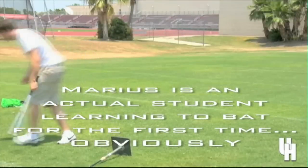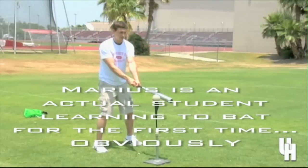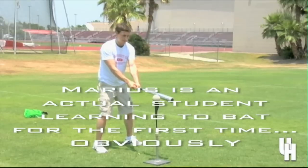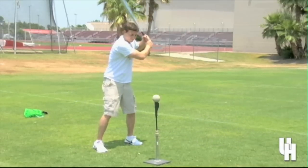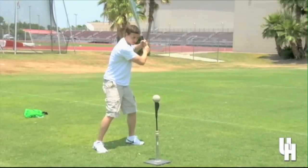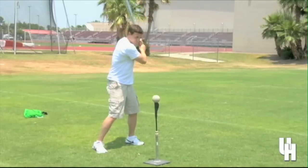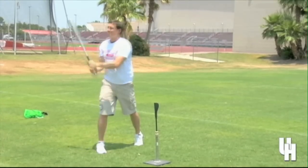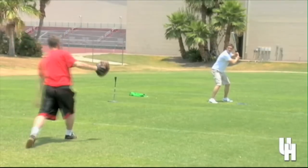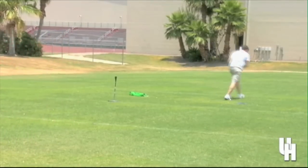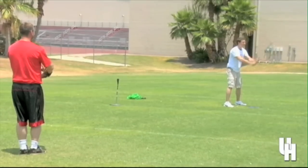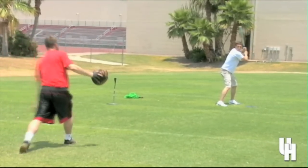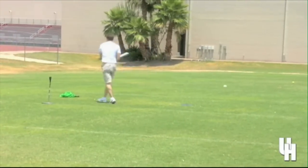Naturally this learner will struggle during this cognitive stage of learning. The next stage of learning is called the intermediate or associative stage, where the learner begins to understand how the various components of the skill are interrelated. During this stage the learner also begins to modify or adapt the movement pattern. We can see that at least off the tee, our student has made significant progress in coordinating his body to produce a purposeful swing. The model in red is also able to demonstrate a reasonable swing in the intermediate stage of learning.